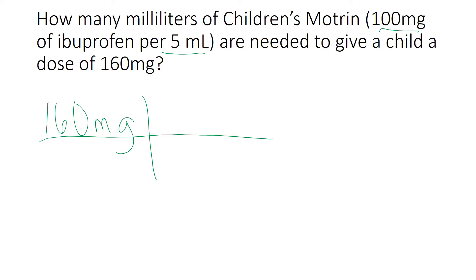So I need to make sure that milligrams is on the bottom, because I would like it to cancel. So I'll put 100 milligrams on the bottom, and 5 milliliters on the top. So that's my dosage. I know that every 5 milliliters is going to have 100 milligrams in it. So when I do this problem, my milligrams will cancel, and I'll be left with milliliters, which is exactly what the problem asked me for.